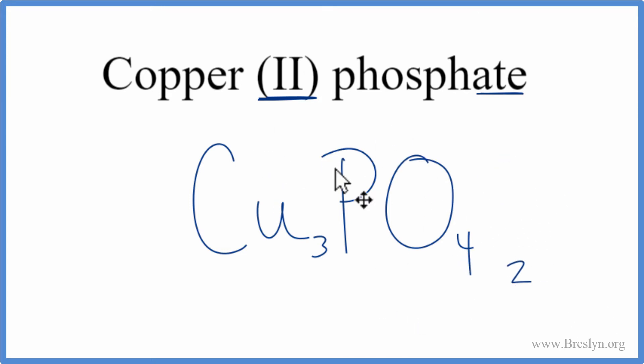And then we do need to put parentheses around this phosphate. We have two of them, it's a polyatomic ion there. So let's put parentheses around the phosphate. And this is the formula for copper 2-phosphate.